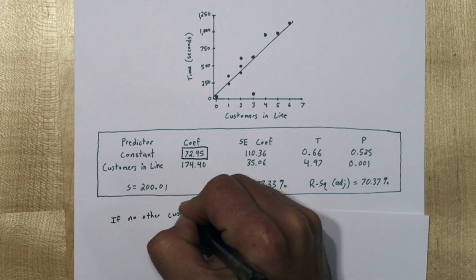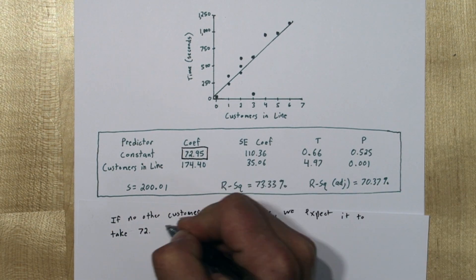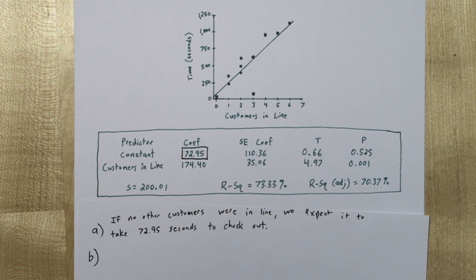We can interpret this as, if no other customers were in line, we expect it to take 72.95 seconds to check out.